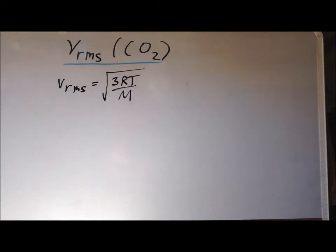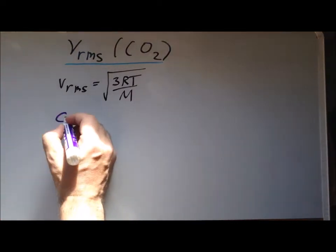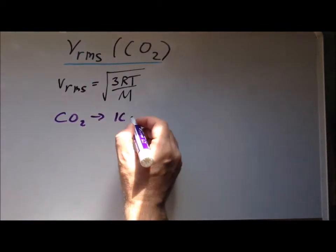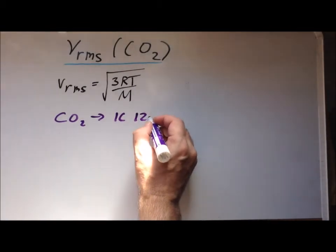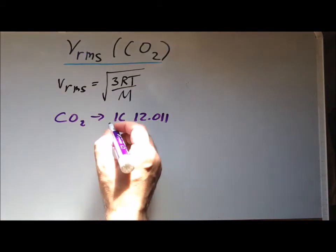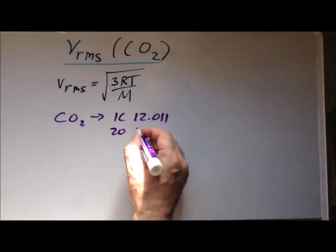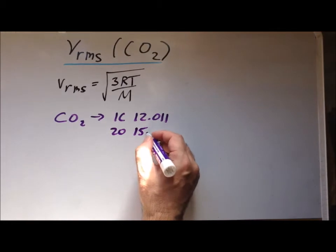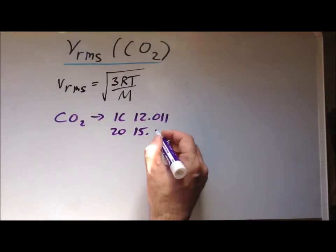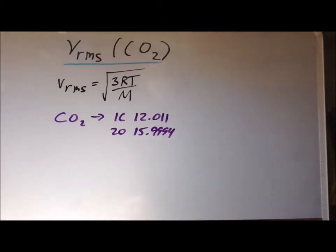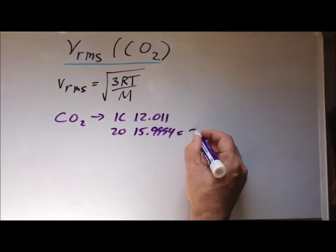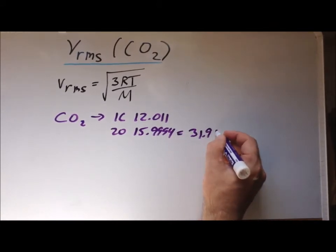For carbon dioxide, which has the formula CO2, we know that it has one carbon atom, which has a mass of 12.01 atomic mass units. It also has two oxygen atoms, each one of which has a mass of 15.9994 atomic mass units. So we multiply that by two, 31.9988.